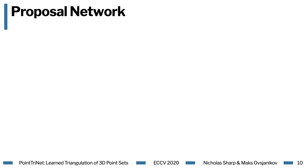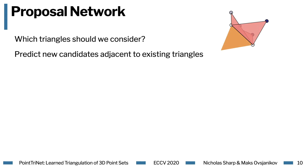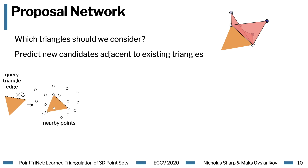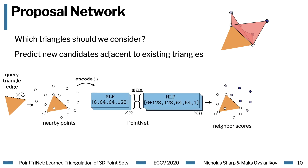The classification network does a good job at identifying desirable triangles, but to apply it we need a set of candidates. Exhaustive enumeration of all possible candidates doesn't scale. Our solution is to leverage a proposal network, which predicts new candidates adjacent to existing triangles. More precisely, across each edge of an existing triangle, the proposal network assigns scores to nearby points for serving as a third vertex of a new triangle. These scores are then sampled to generate triangle candidates. For any given query triangle, we gather nearby points and encode them as input to a PointNet, which learns to predict these neighbor scores, which are then sampled to generate new candidate triangles.